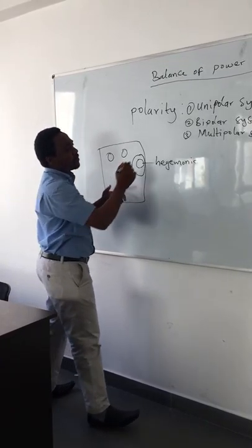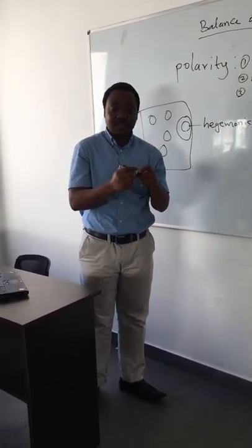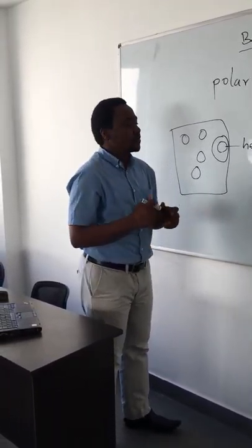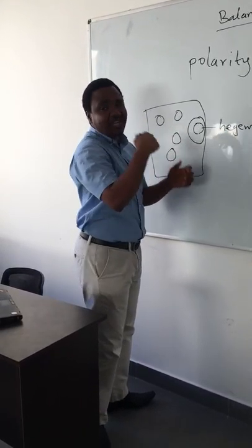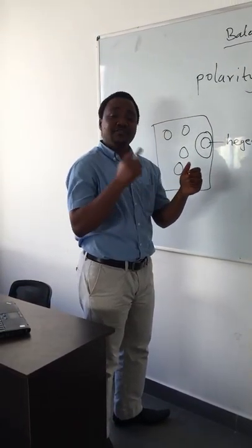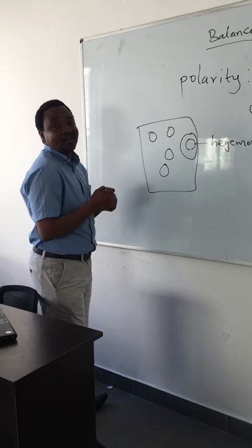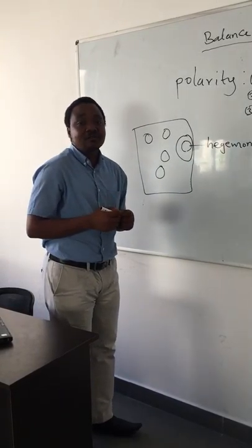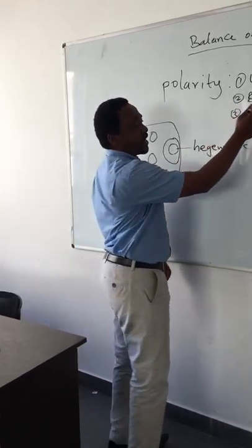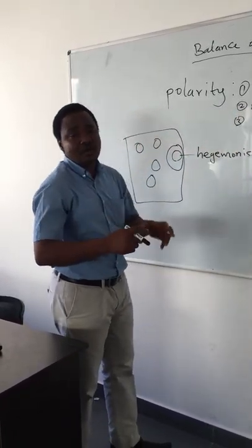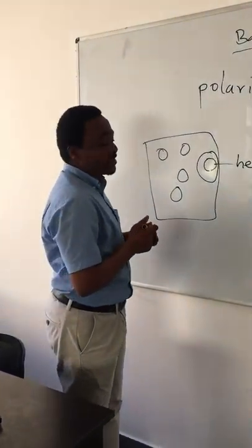We are also talking about the bipolar system. The bipolar system talks about two states. When you consider historically, before the World Wars, Great Britain was having hegemonic power — it was the only state which was powerful. But after the Second World War, the United States also became a big power within the international system. So considering Great Britain and the United States having big powers, we were experiencing a bipolar system — when two states within the international system are controlling other states.